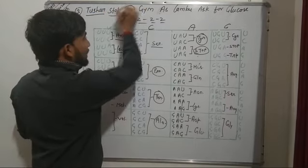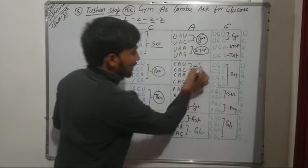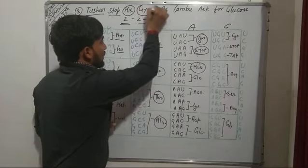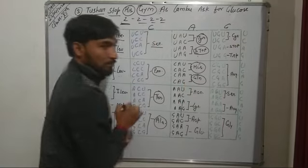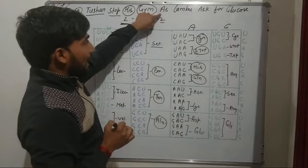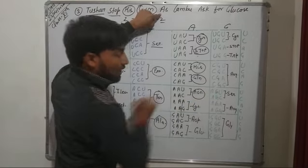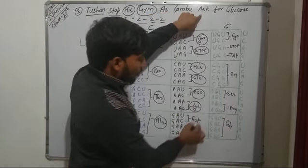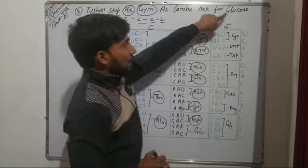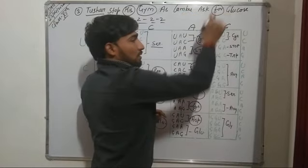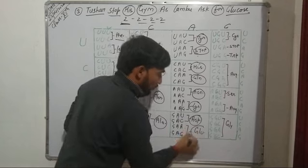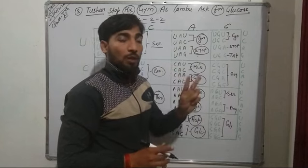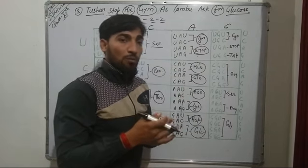HIS is for histidine. GEM is for glutamine. AS is for asparagine. Lumbu is for lysine. ASK is for aspartate. And glucose is for glutamate. Each of these amino acids is coded by two triplet codons. The full sentence is: Tussar stop his gym as Lumbu ask for glucose.